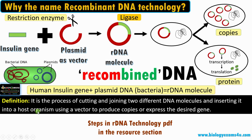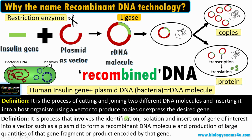Here we have inserted the human insulin gene, so our intention is to make insulin protein inside bacteria — bacteria act just like bio-factories producing insulin. Now we have recombinant insulin called humulin produced by this technology. Recombinant DNA technology is a process of cutting and joining two different DNA molecules and inserting it into a suitable host using a vector molecule to produce copies or to produce proteins encoded by that gene. It involves identification, isolation, and insertion of a gene of interest transferred into a suitable vector such as plasmid to form a recombinant DNA molecule.